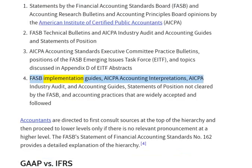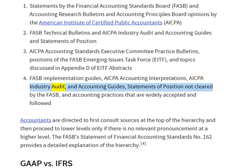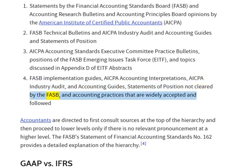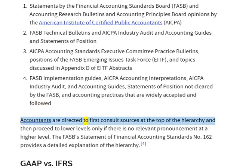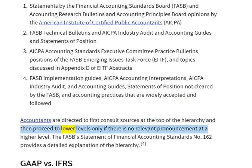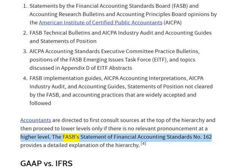FASB Implementation Guides, AICPA Accounting Interpretations, AICPA Industry Audit and Accounting Guides, Statements of Position Not Cleared by the FASB, and Accounting Practices that are widely accepted and followed. Accountants are directed to first consult sources at the top of the hierarchy and then proceed to lower levels only if there is no relevant pronouncement at a higher level. The FASB's Statement of Financial Accounting Standards No. 162 provides a detailed explanation of the hierarchy.